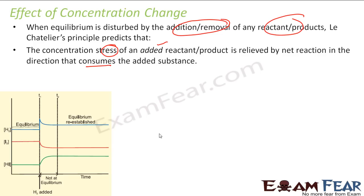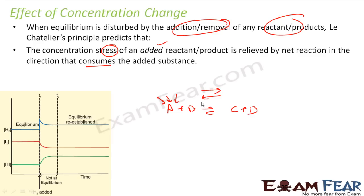For example, let's suppose A + B gives C. If I'm adding some reactants here, that creates a stress, and everybody wants to release the stress. The stress will be released by a reaction in the direction that consumes what was added. So if I add more A, the reaction will move in the forward direction so that A is consumed. Similarly, if I add more B, the stress is relieved by moving in the forward direction to consume B.